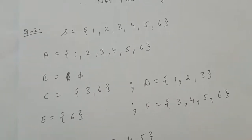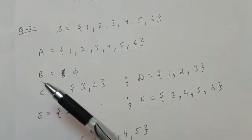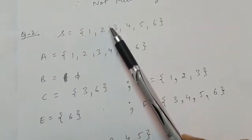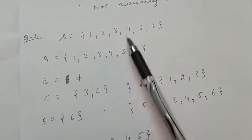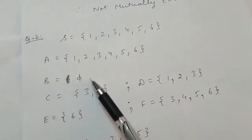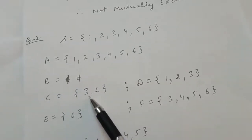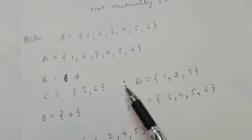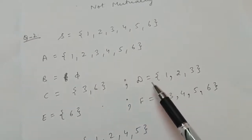In question number 2, you have to find unions, intersections, and other related questions. Event A is a number less than 7 — since all numbers on a die are less than 7, A equals the sample space S. Event B is a number greater than 7, so event B will be empty. Event C is a multiple of 3, so multiples of 3 are 3 and 6. Event D is a number less than 4, so the numbers are 1, 2, 3.